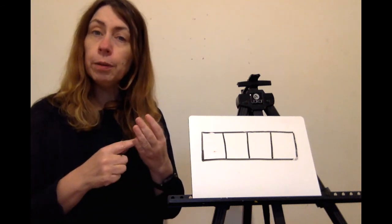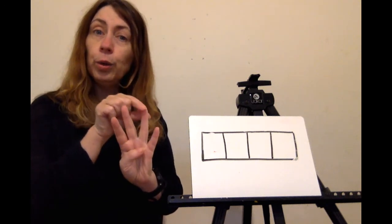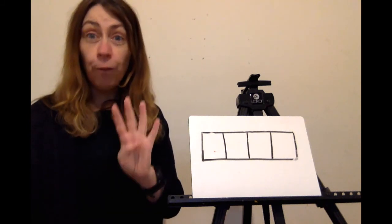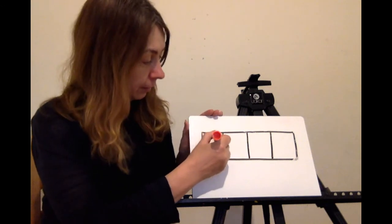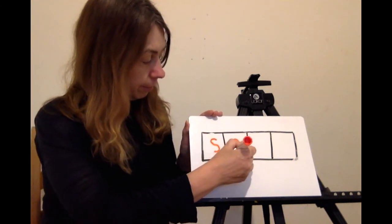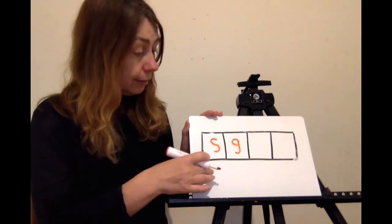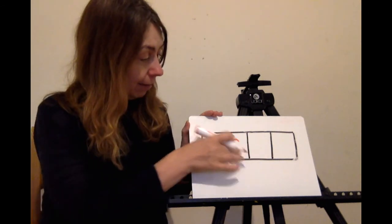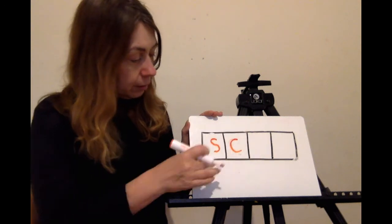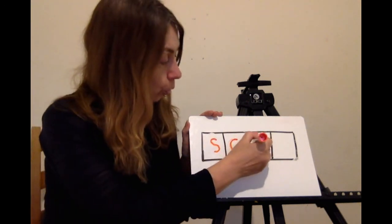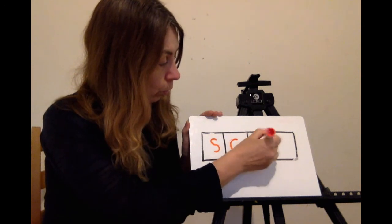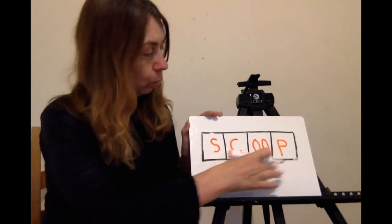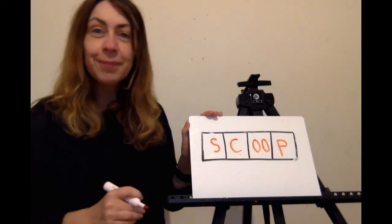Scoop. How many phonemes has scoop? That's right, four. Let's write them. It does sound like an S and a G but we need to remember to write the grapheme C. S, C, oo, P — scoop. Well done everyone.